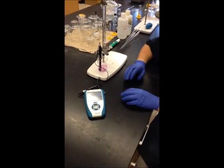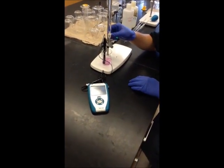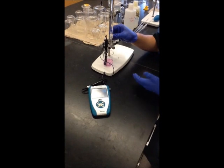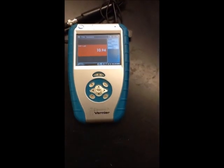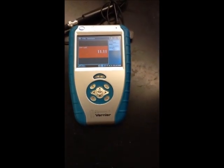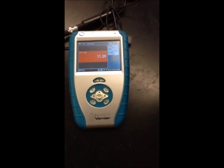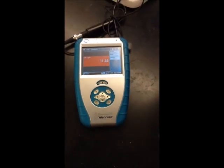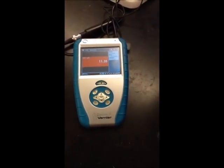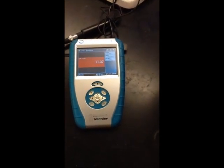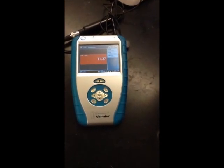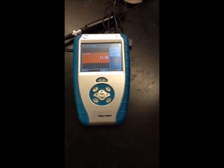After the equivalence point, we can see that the solution is just becoming more basic, and we should see it become more purple. Maybe not, but the pH is definitely rising. I think we've reacted all of our indicator, and that's why it's not turning any more purple. But we can definitely see the pH consistently rising.